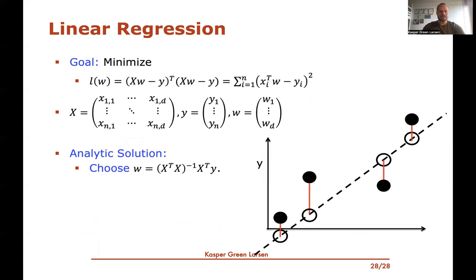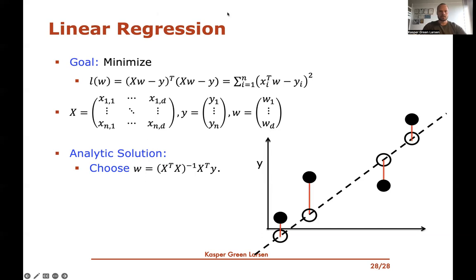In summary, for least squared linear regression we minimize the loss — the sum over all points of (xi^T w − yi)². Defining the data matrix X with feature vectors as rows, label vector y, and parameter vector w, the analytic closed-form solution is simply w = (X^T X)^{-1} X^T y, provided X^T X is invertible. If it's not invertible, delete linearly dependent columns of X until it is. That's how you solve linear regression.